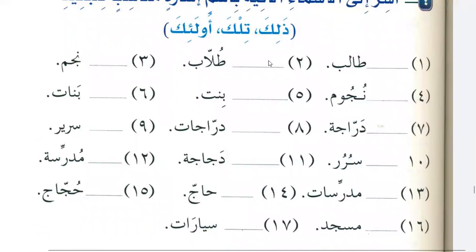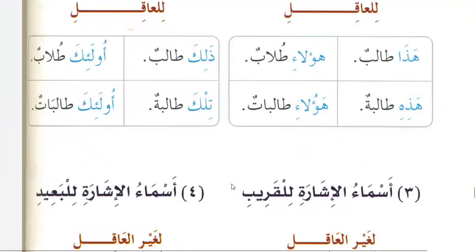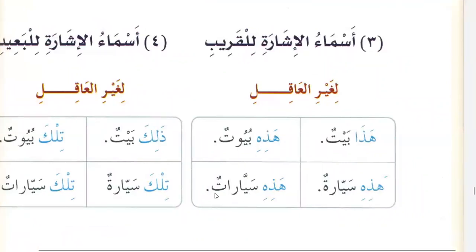Point to nouns with the appropriate far demonstrative: zhalika (masculine), tilka (feminine), ulaika (plural). That is a student. Those are students. Zhalika najam — that is a star; tilka nujum — those are stars (nujum is ghair 'aqil). Tilka bint — that is a girl; ulaika banat — those are girls (ulaika for 'aqil jama'). Tilka darraja — that is a bicycle; tilka darrajat — those are bicycles. Zhalika sareer — that is a bed. Haza, haulai, hazi are asma' ul-ishara lil-qarib (near); zhalika, ulaika, tilka are asma' ul-ishara lil-ba'id (far). For 'aqil we use real plural pronouns; for ghair 'aqil we use singular feminine.